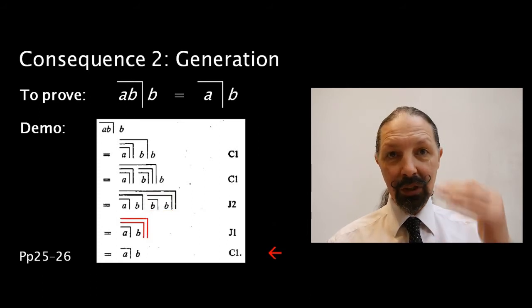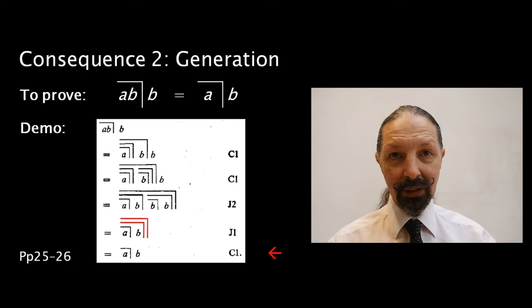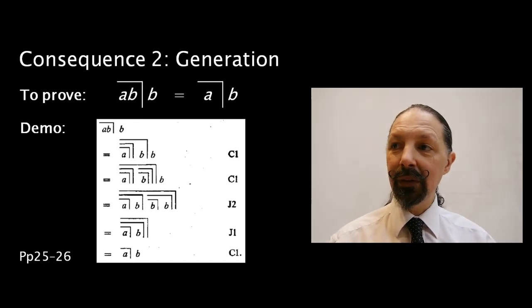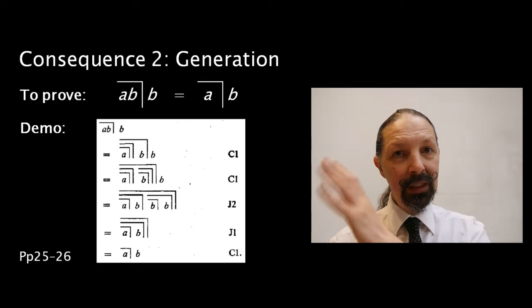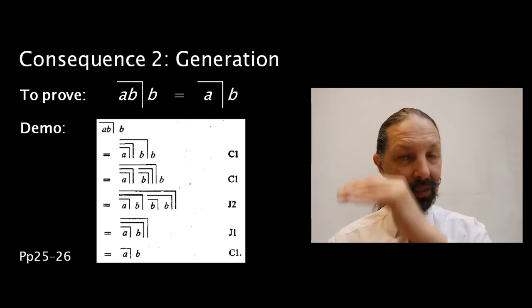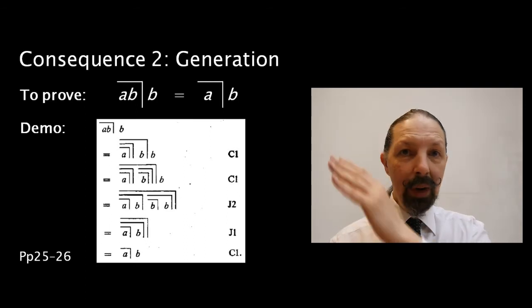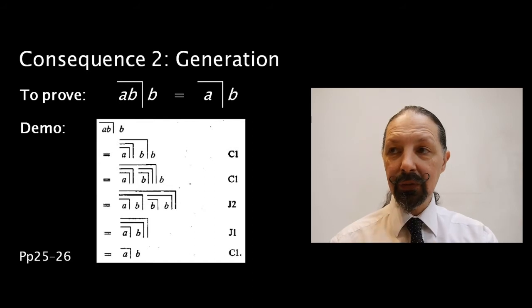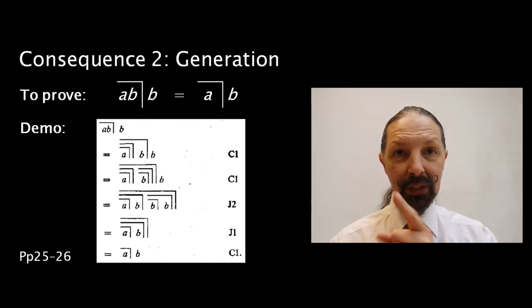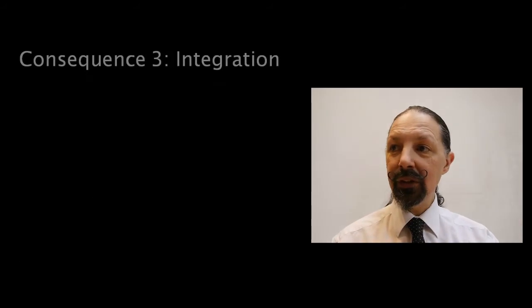Then we're going to take away the nested marks, cancel them out, and we're left with A mark B. And that is the consequence proven. Now, this means that whenever we've got a term outside a division, a mark, we can copy it in to the next level. That's going to be very useful. And we might even use it in the next consequence, which is about integration.